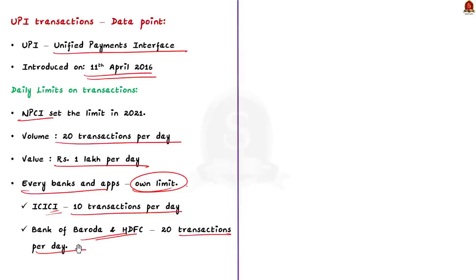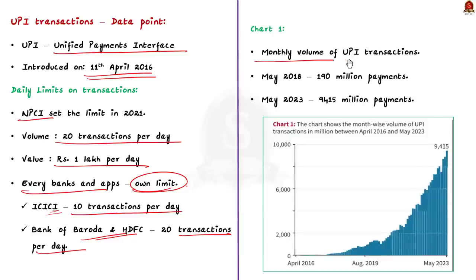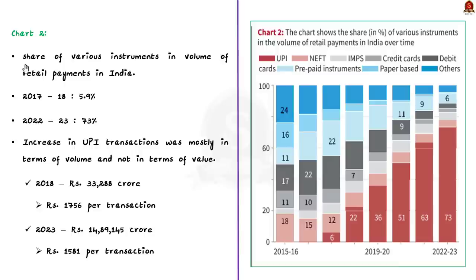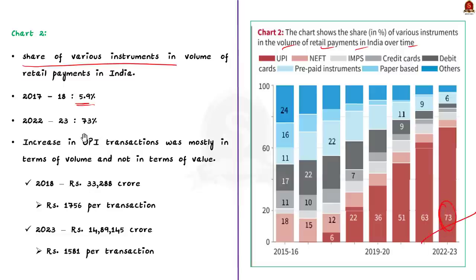Five charts are given in this data point. Chart 1 shows the monthly volume of UPI transactions — in May 2018, 190 million UPI payments were made, but in May 2023, 9,415 million UPI payments were made, which is around a 4,855% increase. Chart 2 shows the share of various instruments like UPI, NEFT, IMPS, and credit cards in the volume of retail payments in India. In 2017-18, the share of UPI payments was just 5.9%, but in 2022-23 its share has increased to about 73%.